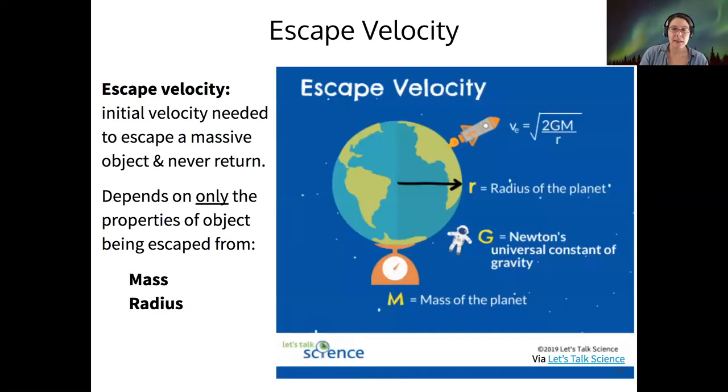And so to understand escape velocity, you can use conservation of energy and some physics of classical mechanics to come up with the escape velocity equation. And it turns out that the equation for escape velocity only depends on the properties of the object you're trying to escape. So in this case, if I have a rocket ship trying to escape the Earth, then only the mass and the radius of the Earth enter into this escape velocity equation. It actually doesn't matter what the mass of your rocket is. That's because the escape velocity is all about escaping that object's gravity.